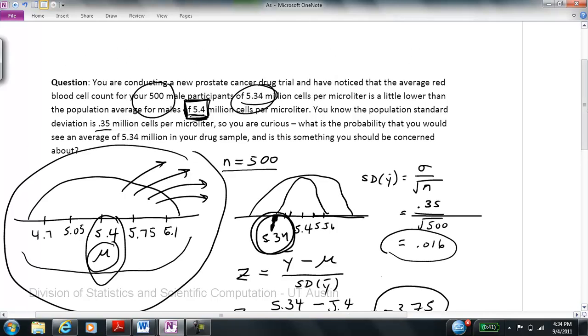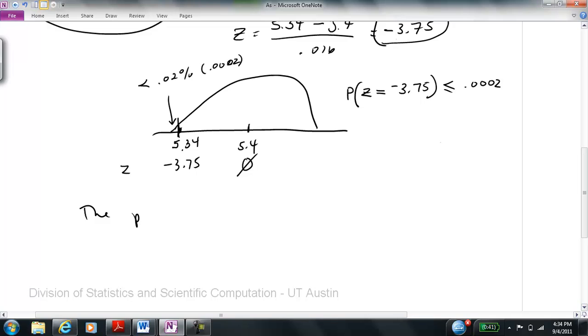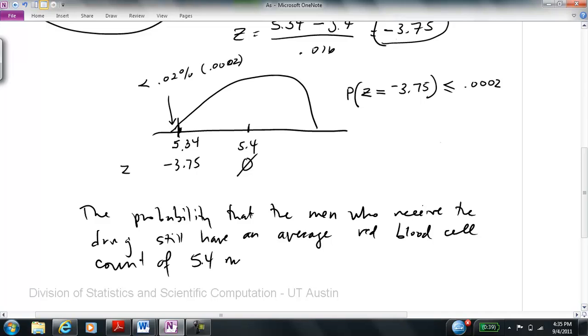So the answer to this is the probability that the men who receive the drug still have an average red blood cell count of 5.4 million per microliter is less than 0.02%. It seems the drug is lowering their red blood cells. I hope this has been a helpful video on sampling distributions and thank you for listening.